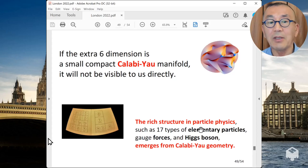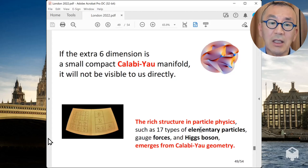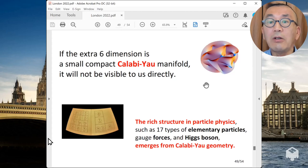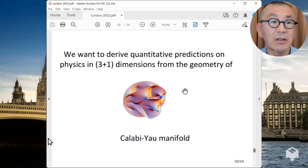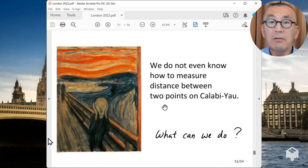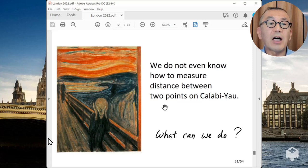It's a particular type of geometry that is not visible to us directly, but plays a very important role. For example, the rich structure of elementary particles, such as 17 types of elementary particles, gauge forces, and Higgs bosons, all emerges from the geometry of Calabi-Yau. So we need to study the geometry of Calabi-Yau in order to derive property of elementary particles from this fundamental theory. So this is what we want to do. And that's one of the things actually I explained during my set of lectures at UK-Japan Winter School 10 years ago.